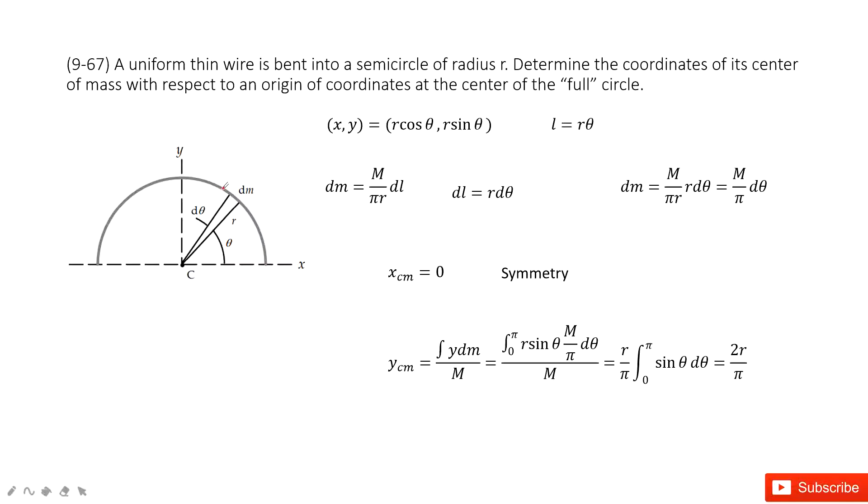First, when we observe it, we can see it is symmetry. It's a mirror symmetry along the y-axis. So the center of mass for x is zero. The most important thing we need to find is the center of mass for the y component.